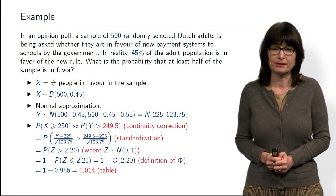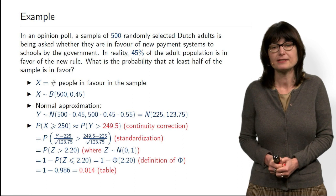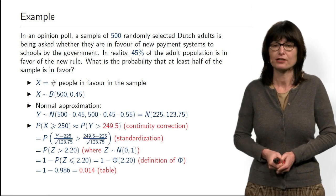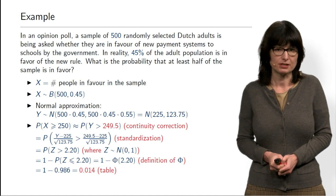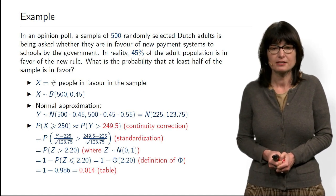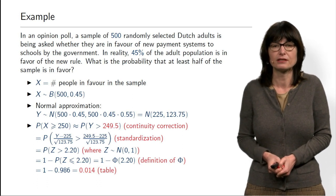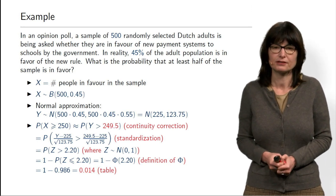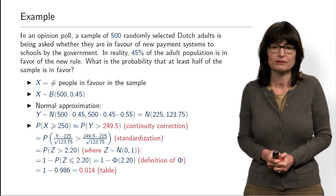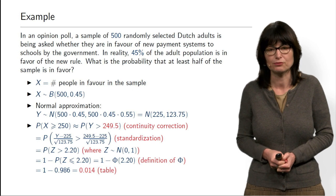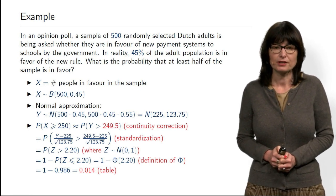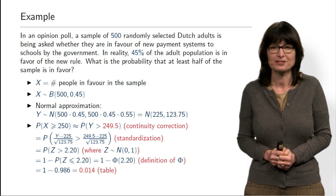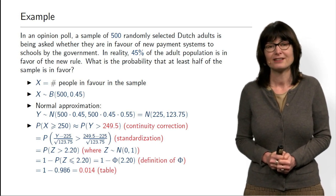So our sample is quite large. The probability that the majority of the sample — or at least half — will be in favor of the rule, while actually the majority of the population is against it, is very small at about 1.4%. Of course, we can still make mistakes and the probability is not zero — in about 1% of cases we can be wrong — but in general a sample of 500 randomly chosen people should be representative enough. This concludes the micro lecture about binomial distribution and its normal approximation. Thank you very much for your attention.